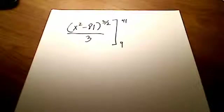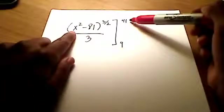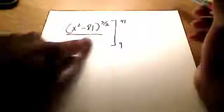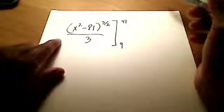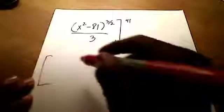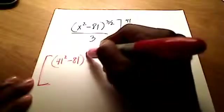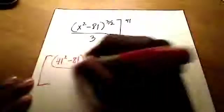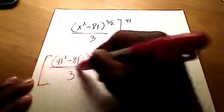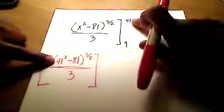Okay, that's looking a little bit better. The fundamental theorem of calculus says everywhere I see an x, I'm going to substitute in 41, whatever that quantity comes out to be, minus everywhere I see an x, I'm going to substitute in my lower limit of 9. Alright, so I'm going to do it this way. I've got 41 squared minus 81, and all of that is being raised to the 3 halves all over 3. This whole thing is over 3. So there, all I did was I substituted in place of x, I substituted in that upper limit of 41.